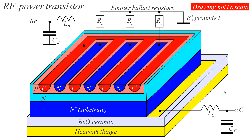Besides bipolar transistors, we also have field effect transistors. Things are a little bit different, but they are made of the same semiconductors — silicon, but also other semiconductors. We are going to talk next hour about field effect transistors of different kinds, made of different semiconductors. Today the issue was just to get some gain, get some output power, and get up with frequency, but we have to look at more details in the following lectures about transistors.